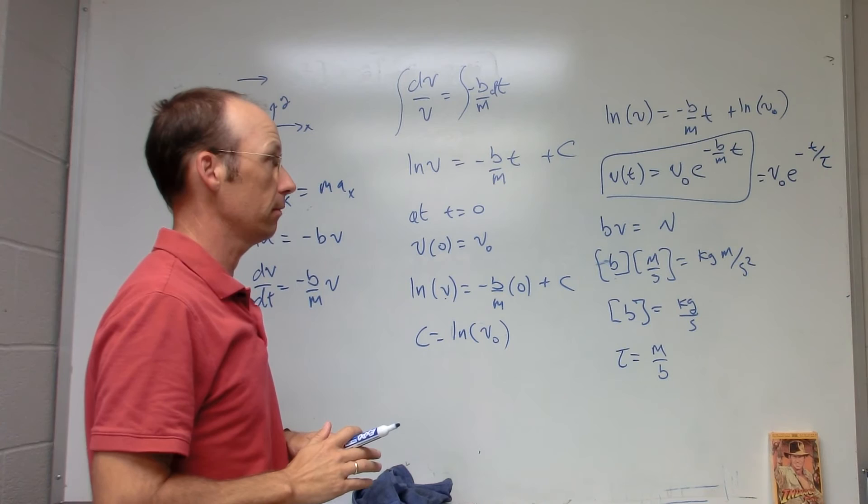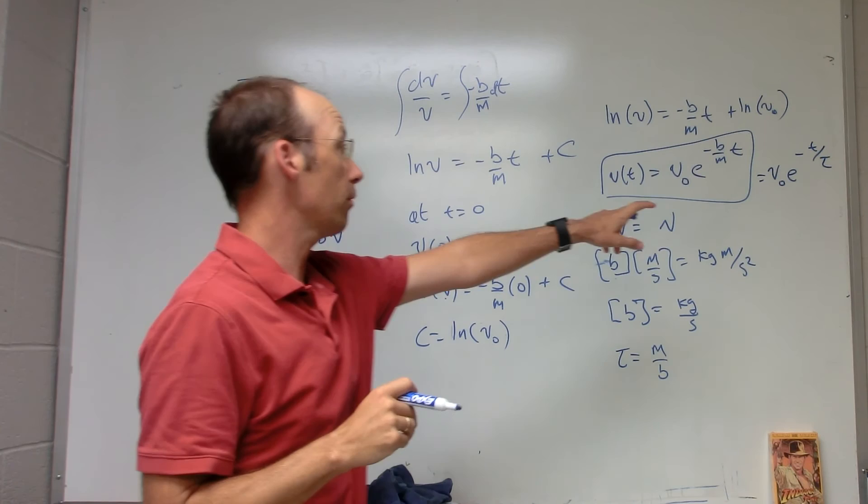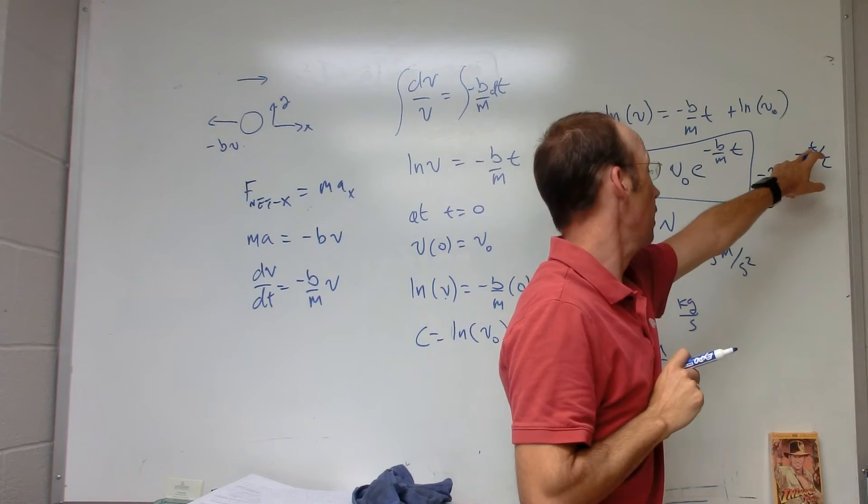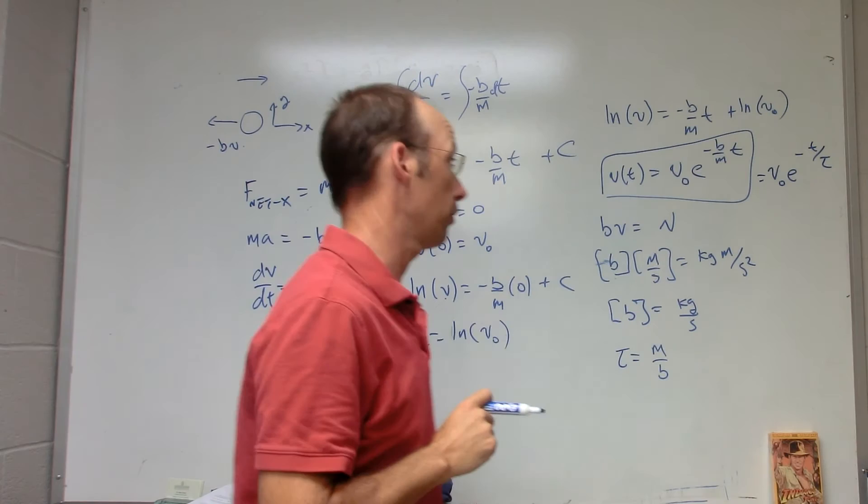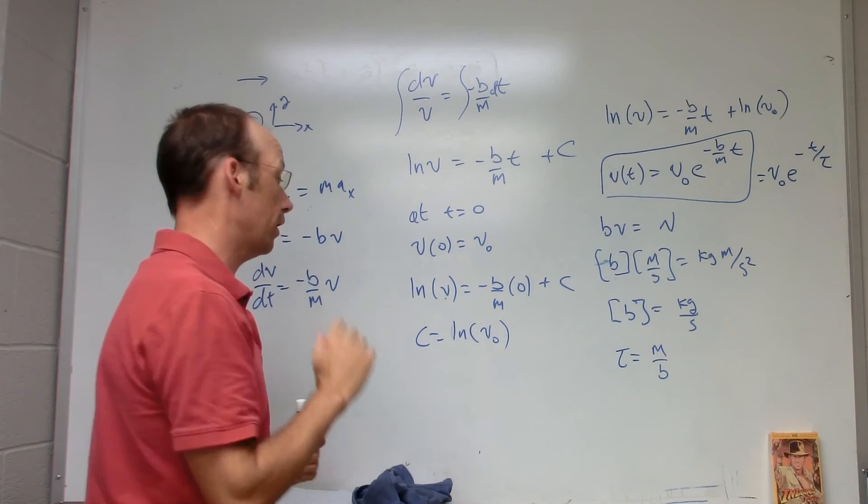As time increases, e^(-t/τ) approaches zero, so the velocity also goes to zero — the ball slows down over time. Now, what about the position? What if I want to find the position of the ball as a function of time?